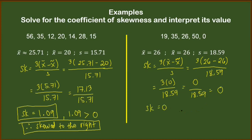Therefore, our SK is 0. And since it is exactly equal to 0, we can say that this distribution is normal distribution.